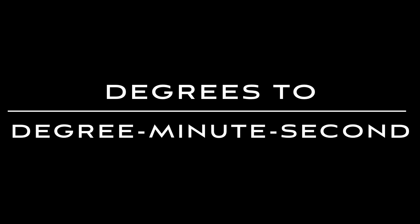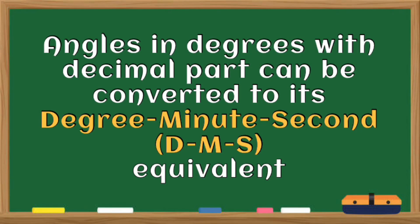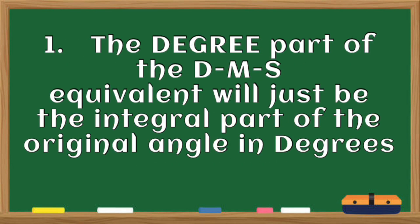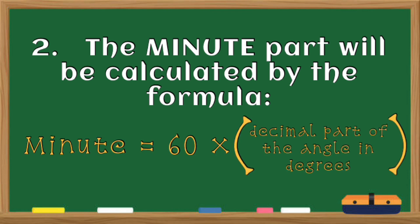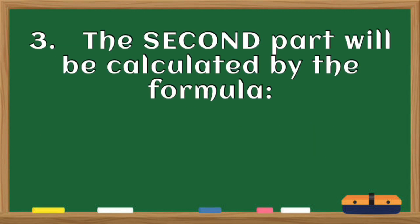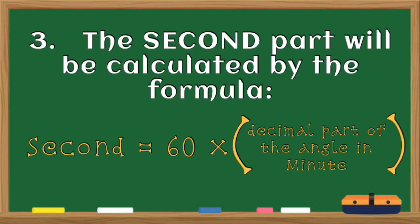Now we are going to convert angles from degrees to degree-minute-second, or DMS. Angles in degrees with a decimal part can be converted to their DMS equivalent. The degree part of the DMS equivalent is simply the integral part of the original angle. The minute part is calculated by the formula: 60 times the decimal part of the angle in degrees. The second part is calculated by: 60 times the decimal part of the minute.